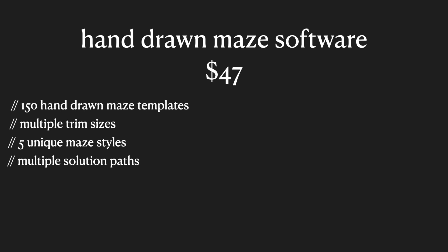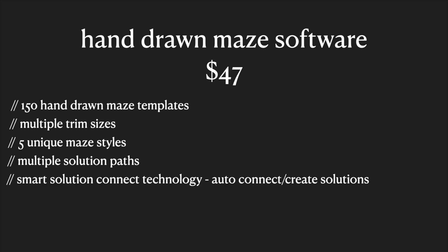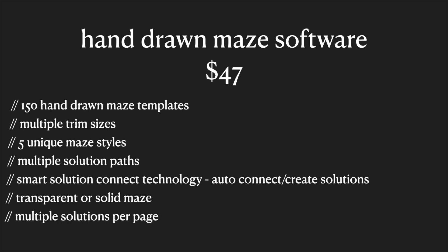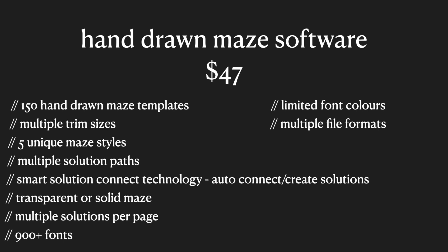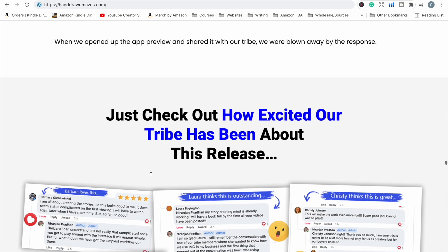The mazes have multiple solution paths. You get access to smart solution connect technology, which automatically creates and connects solutions for these mazes. You can have transparent mazes or white filled interior mazes — there's just one little button you click. You get access to having multiple solutions on your pages, choosing one solution per page, four, six, or other options. You have 900 plus font options for any text, a limited color palette if you want some color, and you can download your files in PDF, PNG, or JPEG format.